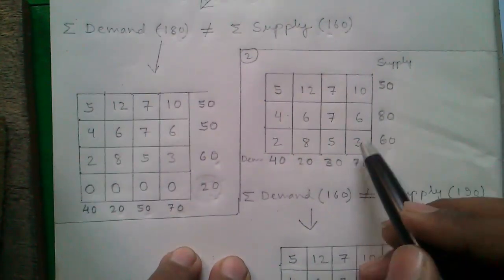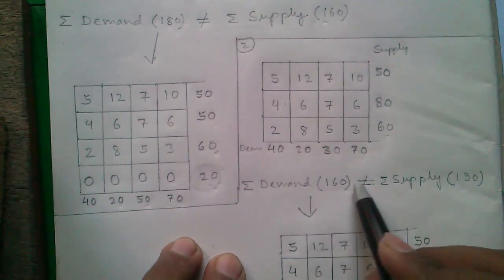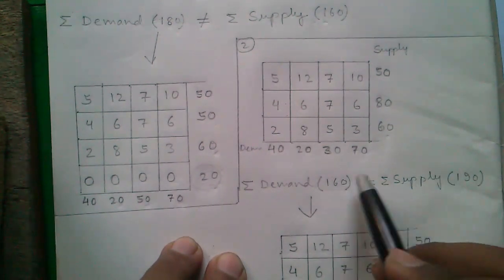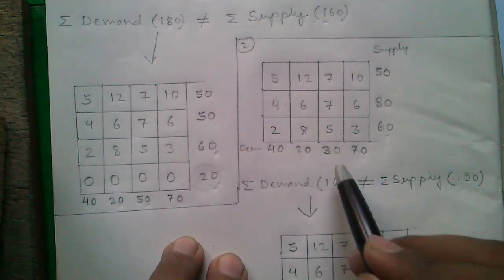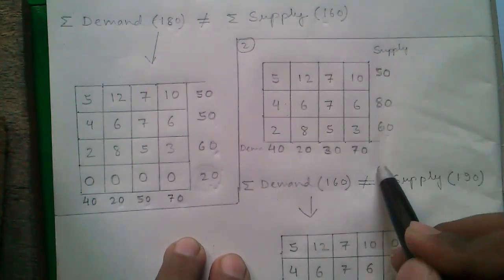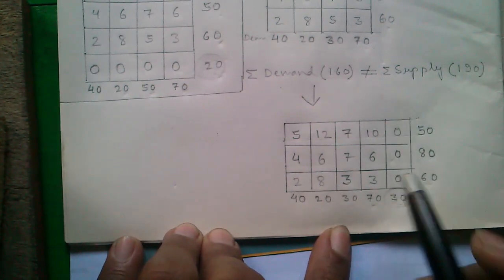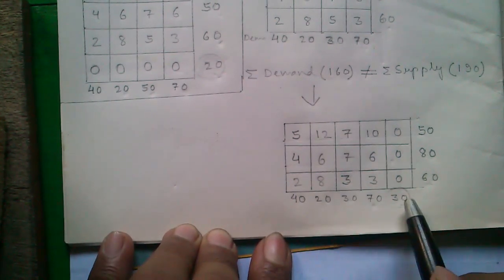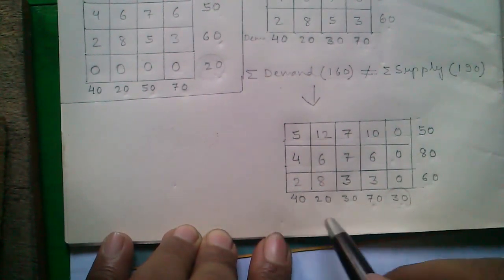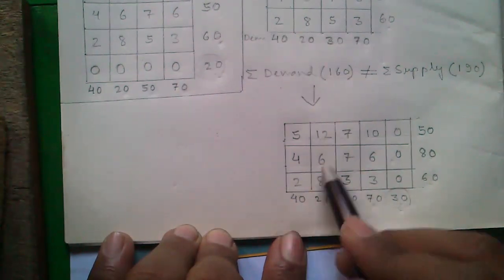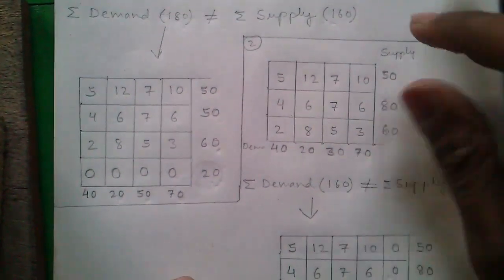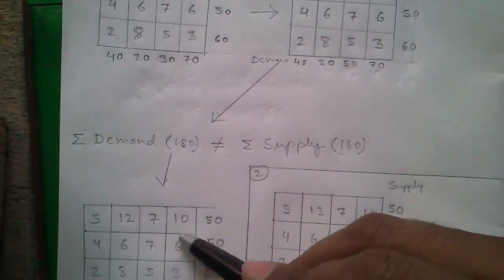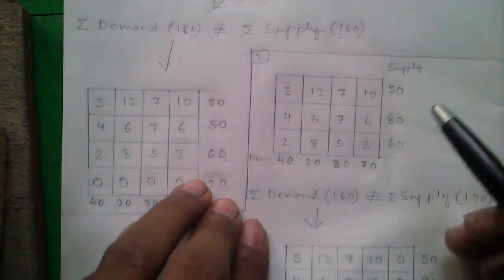Sub-case 2: here the sum of demands is 160 but the sum of supply is 190, so we have a deficiency of 30 in the row-wise direction (supply exceeds demand). In that case, we add a dummy column and write the deficiency value of 30 against it. Our sum of demands becomes 160+30 = 190, matching the sum of supply. Just remember: if the deficiency is column-wise (demand > supply), add a dummy row; if the deficiency is row-wise (supply > demand), add a dummy column.